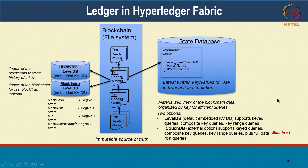Today there are two implementations. One is LevelDB, which is an embedded key-value database that supports basic functionality: key queries where you give a particular key and ask for the value, composite key queries, and range queries — give me all keys from A to B in that range. That is a basic, very simple key-value store. The slightly more sophisticated one is CouchDB, which is really a document store. Each key is really a document — it can be a JSON document — and it supports key queries, composite queries, range queries, plus full rich data queries.